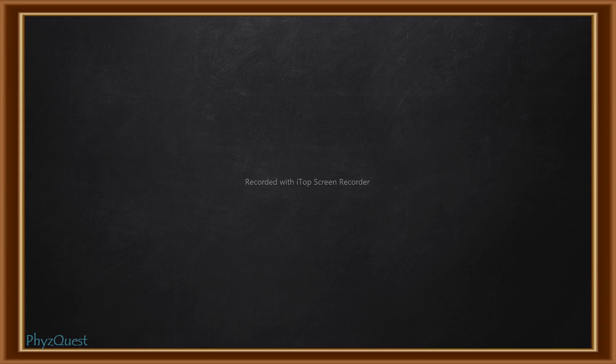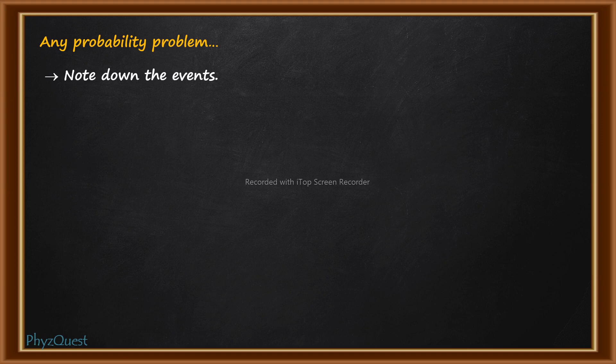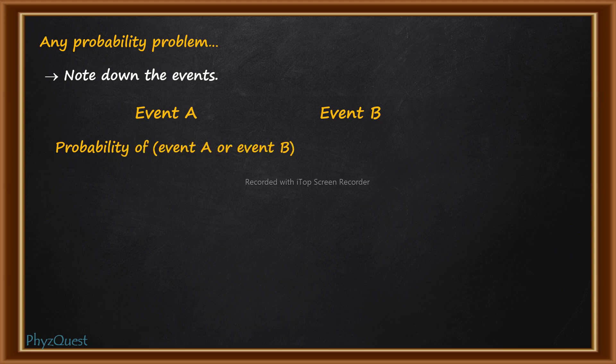In any probability problem, the first thing you have to do is write down the events. When you note down the events, the next step is to check — let us suppose there are two events, event A and event B — whether you need to find out the probability of event A or event B, or the probability of event A and event B.